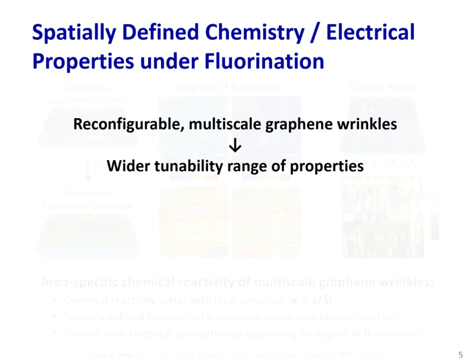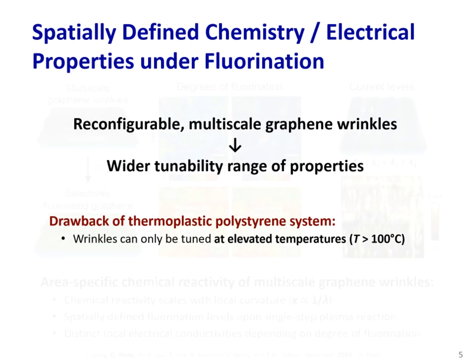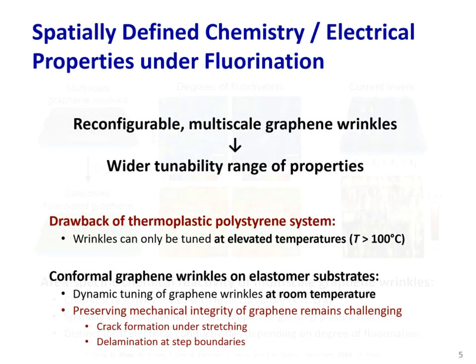Being able to reconfigure the topography of these multi-scale graphene wrinkles would offer more design flexibility in engineering local properties. However, the thermoplastic system we established can only be deformed above the glass transition temperature of the polystyrene substrate, which is typically 100 degrees Celsius. Alternatively, we can use an elastomeric substrate coated with fluoropolymer layers, but the challenge is that maintaining integrity of graphene would be difficult, because graphene typically cracks when it stretches more than a few percent tensile strain. Also, maintaining conformal contact of graphene at boundaries between regions of different fluoropolymer layer thicknesses would not be trivial.